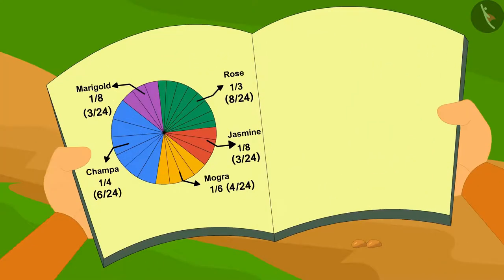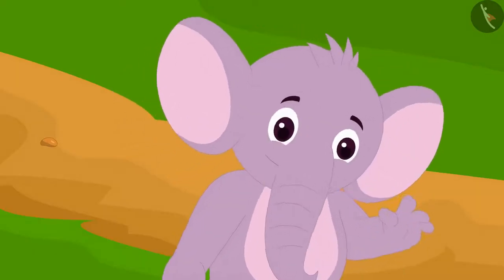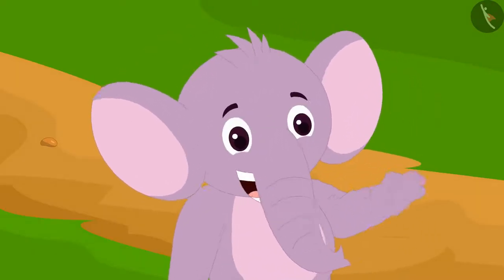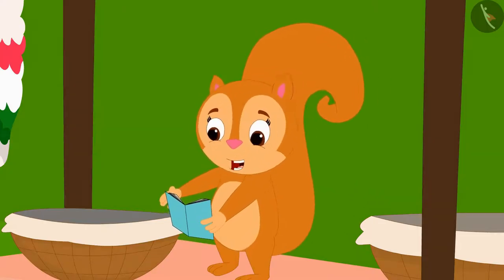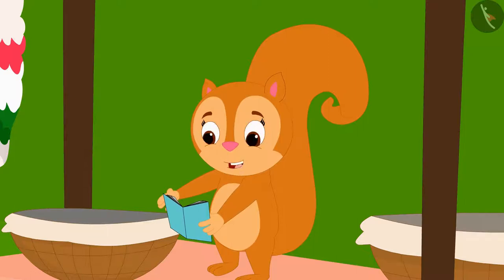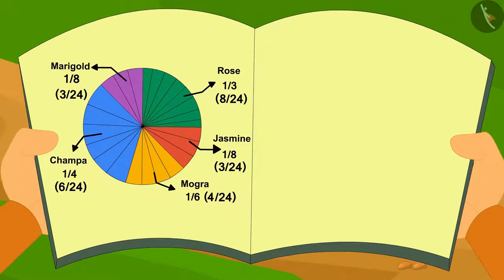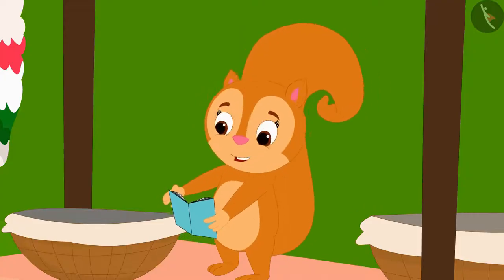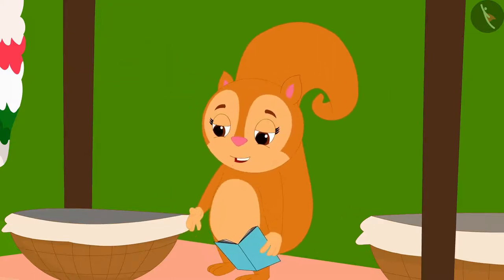To find out, Chanda created a pie chart by looking at the record of flowers used in previous orders. Just then, Appu came to Chanda's shop. Appu asked what the pie chart was, and Chanda explained it shows the popularity of her flowers, made from information about how many flowers she used in various orders. According to it, the largest part is the Champa flowers, meaning Champa flowers are the most popular.